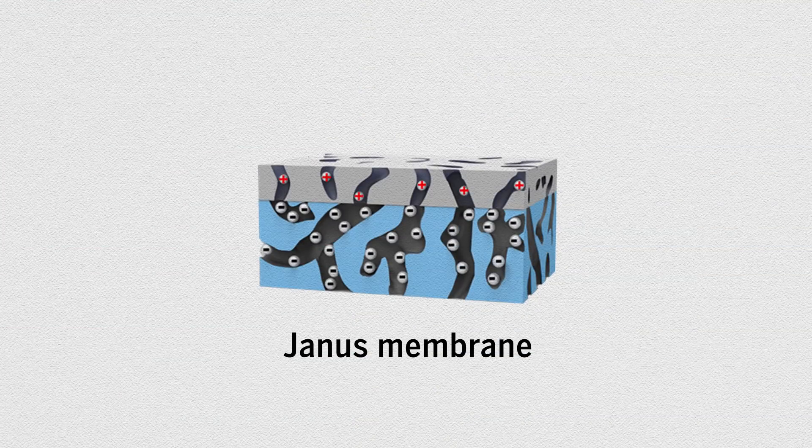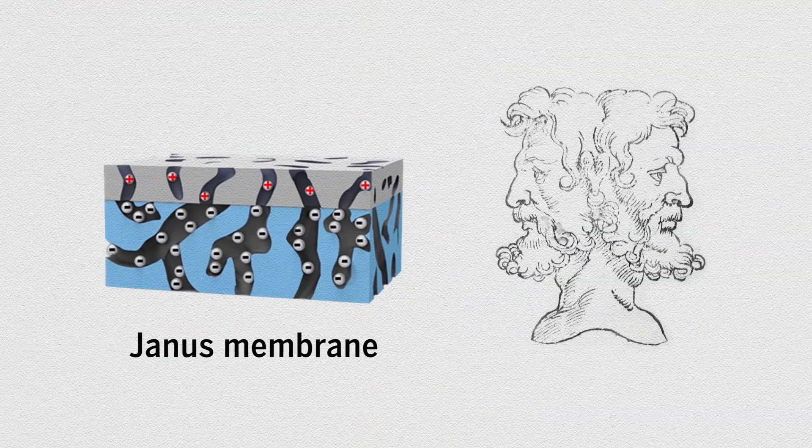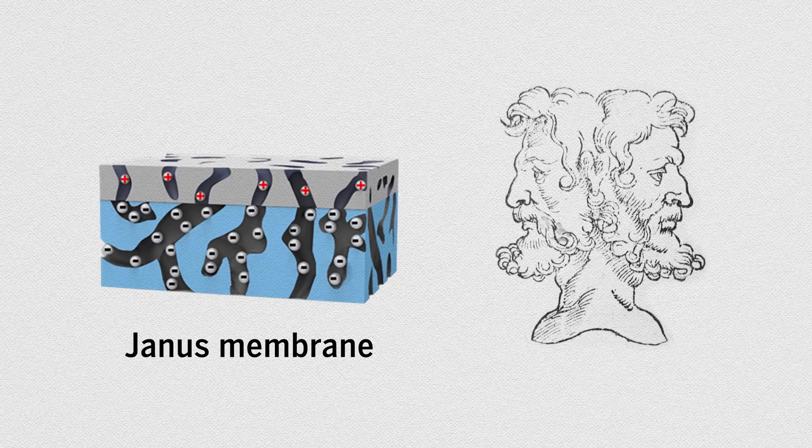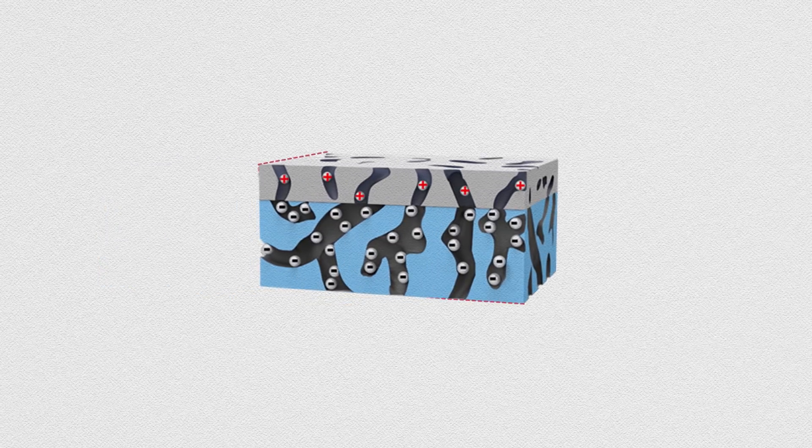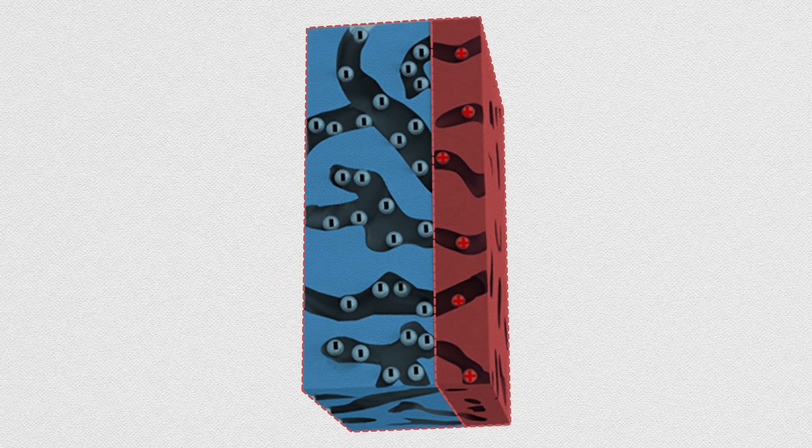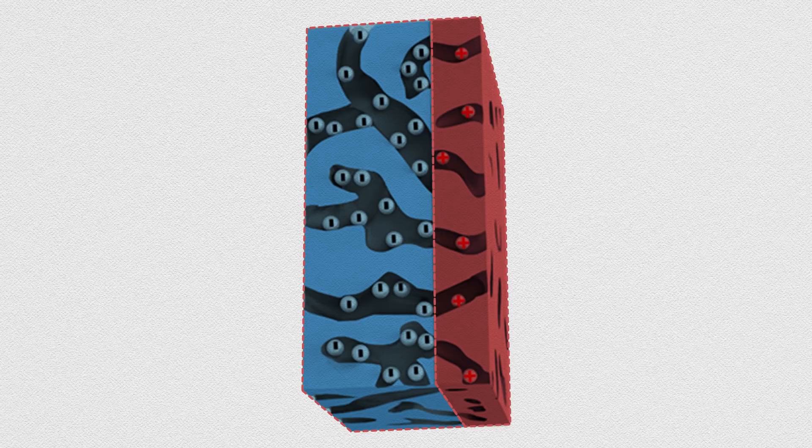Now, scientists have built a 3D Janus membrane, named after the mythical god with two faces. The Janus membrane has different properties on each side, which makes it a good gatekeeper for encouraging a steady flow of charged particles from one side to the other.